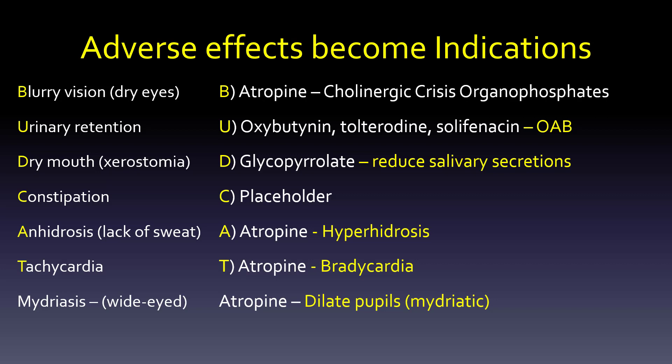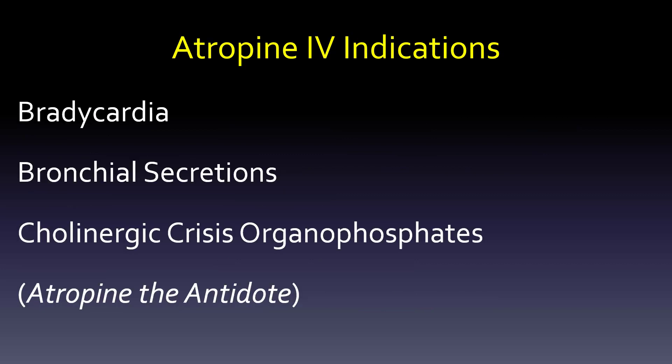Mydriasis — wide-eyed — you might want to dilate the pupils. Although we don't really use atropine for that, we use something called homatropine; we get that it's a mydriatic, which is something that dilates and makes those pupils wide, just like our cat. So if you were using atropine IV, you'd use it for bradycardia, bronchial secretions, or in cholinergic crisis with the organophosphates — atropine as the antidote.